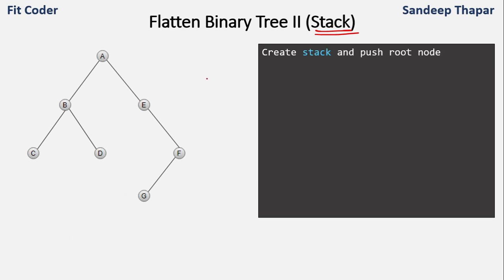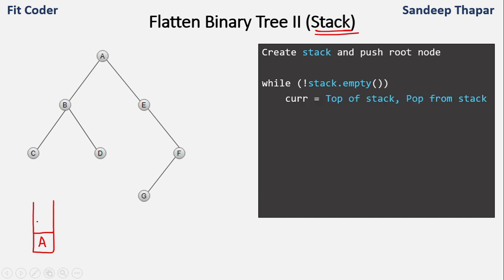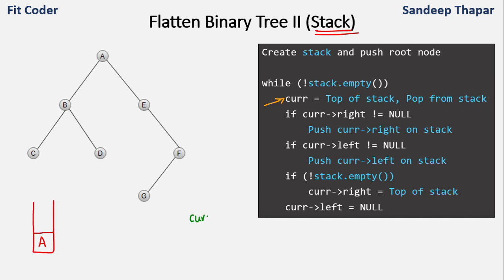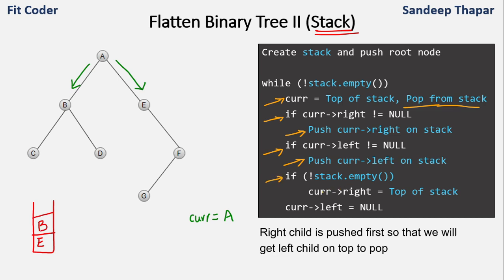We run a while loop until the stack is not empty. Current becomes equal to A, then we pop from the stack so it becomes empty. We check right of A, which is E, and push E. Then we check left of A, which is B, and push B. Stack is not empty, so we set right of current (A) to the stack top, which is B — right of A now points to B, breaking the old link. We set left of A to null, breaking that link too.